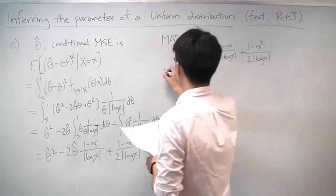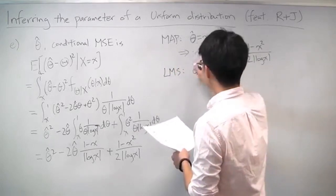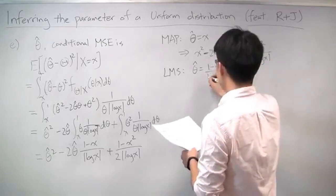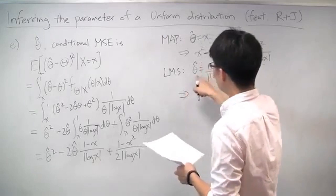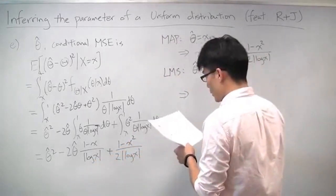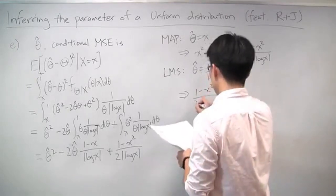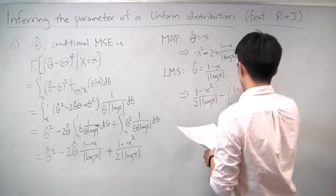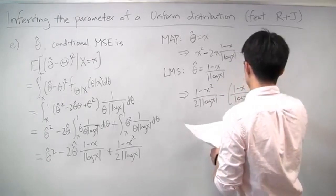For the LMS estimate, remember, theta-hat was equal to (1 minus x) over absolute value of log x. When you plug that particular theta-hat into the formula, what you get is that the conditional MSE is equal to (1 minus x squared) over 2 times absolute value of log x, minus the quantity (1 minus x) over log x, squared.